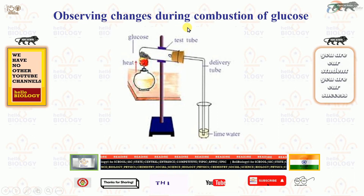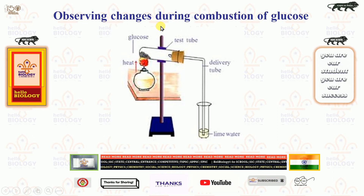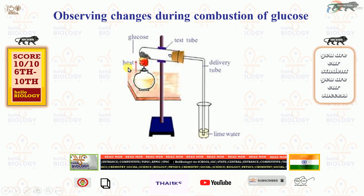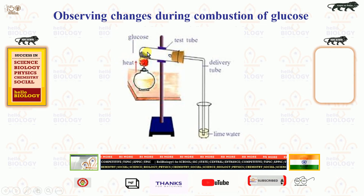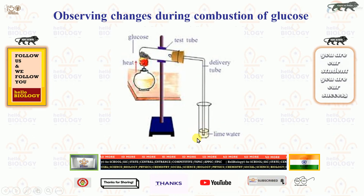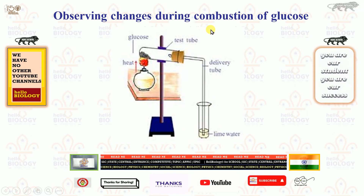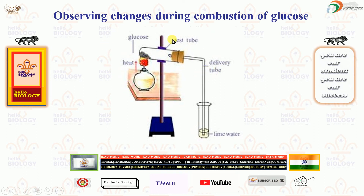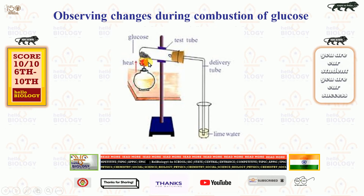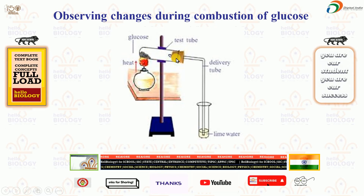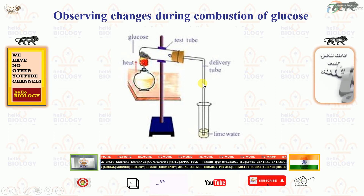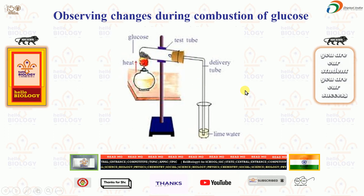In observing changes during combustion of glucose, we understand that when glucose is burnt outside our body, it produces carbon dioxide and heat. That carbon dioxide is tested with lime water, and the entire setup is made outside our body. But in our body, the same glucose is burnt with the help of oxygen, but much less heat is released — our body controls it.